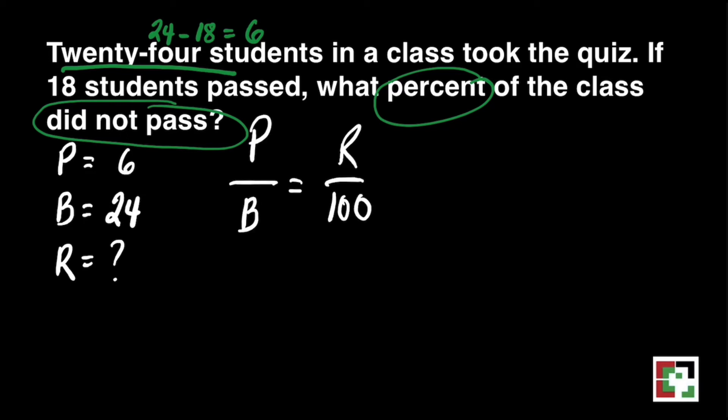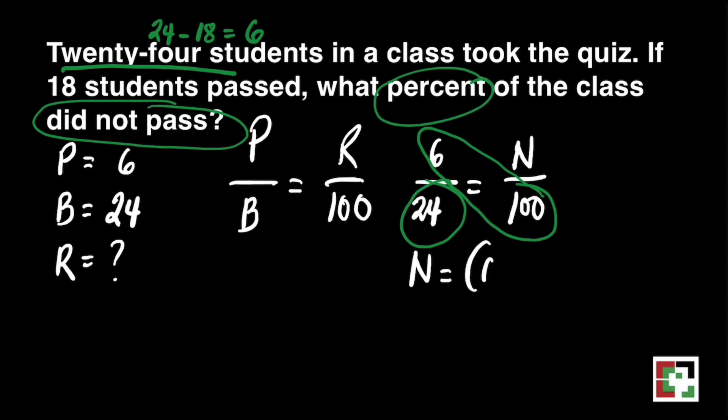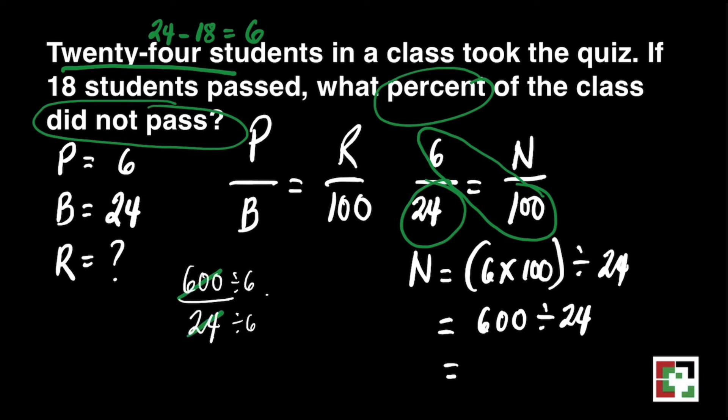We'll use the same formula, P over B equals R over 100. Let's substitute. How to get the value of N? Just do cross multiplication. That's 6 times 100 divided by 24. 6 times 100 is 600 divided by 24. We will just use lowest term, 600 over 24. What number can we divide both numbers? That's 6. That's 100 over 4. That will give us 25. Therefore, 25% of the class did not pass the quiz. And we're done.